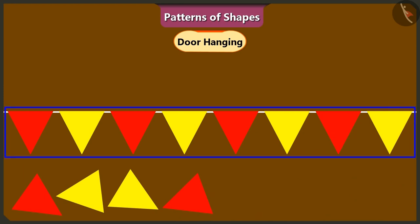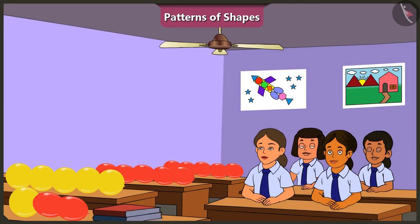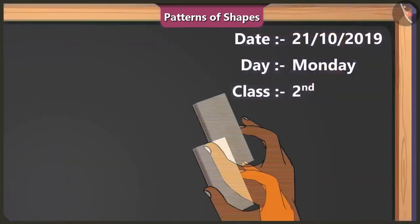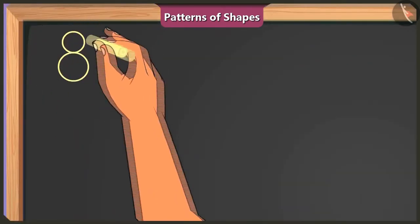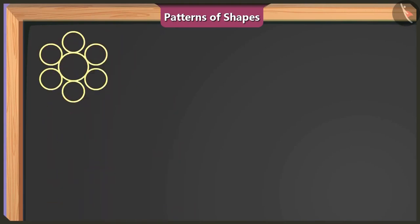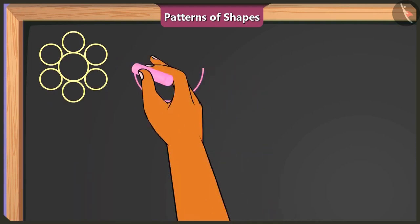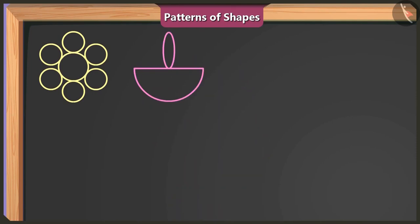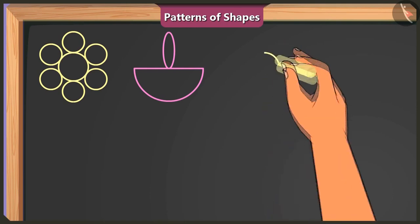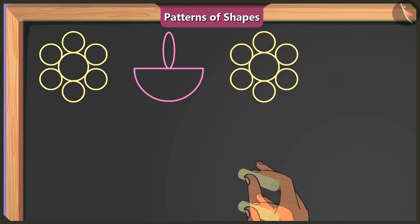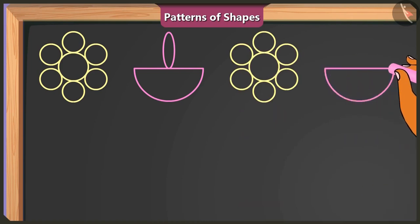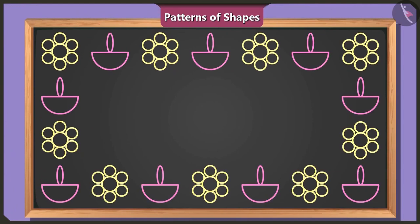Next, they decorate a board. On one corner, big and small circle shapes make a flower. Next to it, a semi-circle and an oval shape form a diya. Then another flower made of circles, then another diya. They keep repeating this sequence — flower then diya — creating a beautiful pattern on the board.